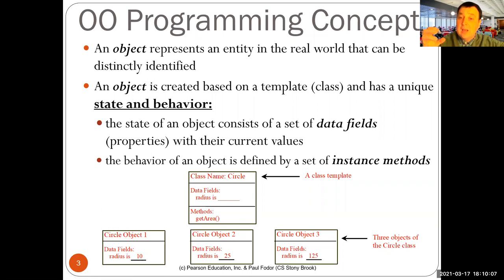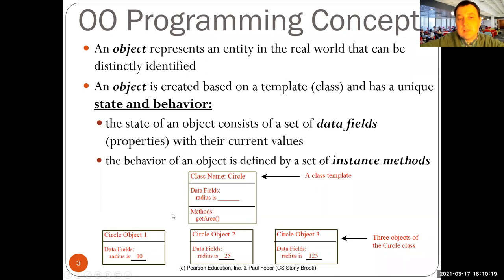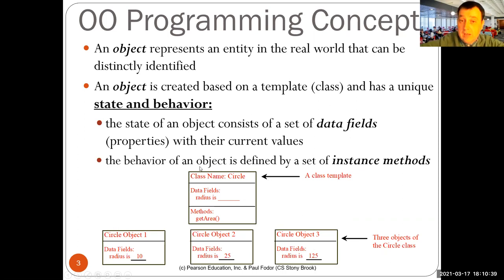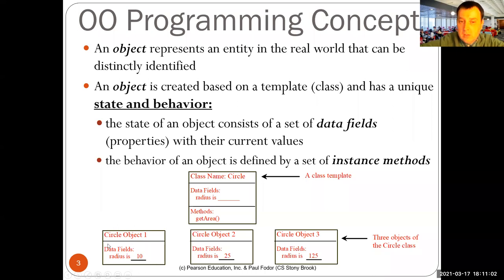In addition to the class diagram, you also have objects in this UML diagram. If you want to represent multiple objects — like circle1, circle2, circle3 — as instances of the class circle, each object has a different value for the data field radius. The first circle has a radius of 10, the second has 25, the third has 125. You don't see methods in the object representation because they are inherited — circle object 1 is an instance of circle, so by default it has the method getArea.